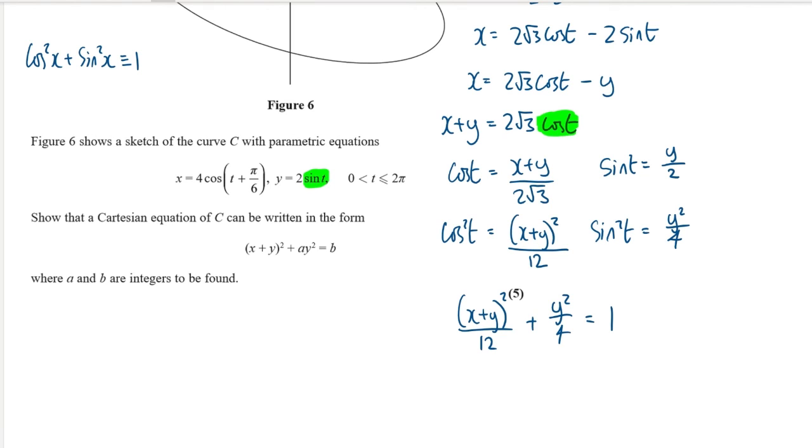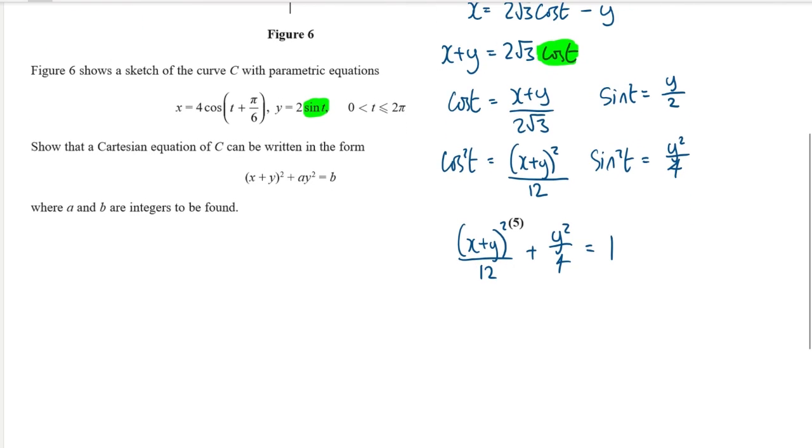I can then multiply both sides through by 12 and this will give me (x plus y) squared plus take out a factor of 4 will leave me 3. So 3 y squared is equal to 12. And we have our Cartesian equation in the correct form where a is equal to 3 and b is equal to 12.